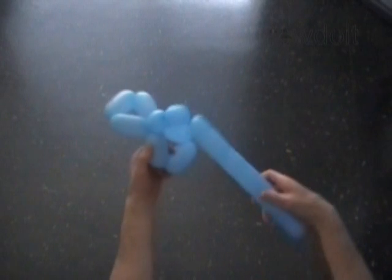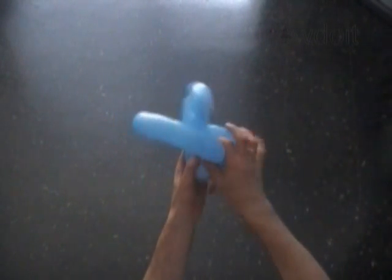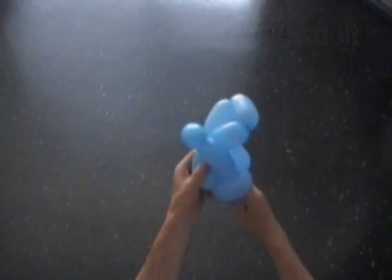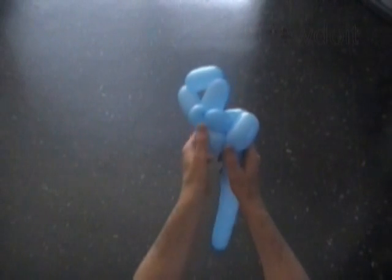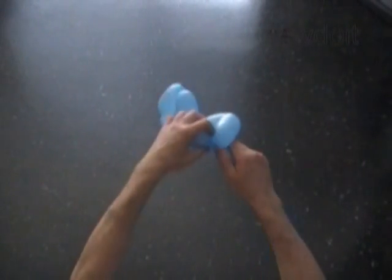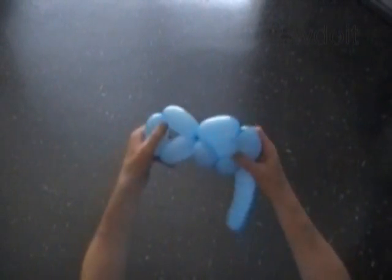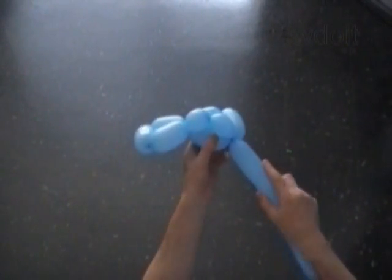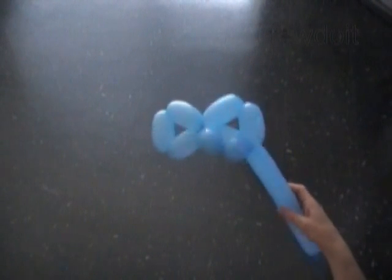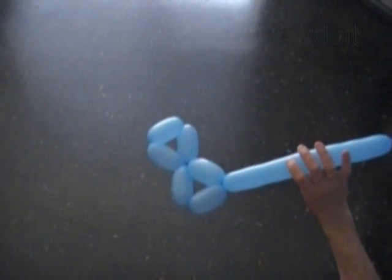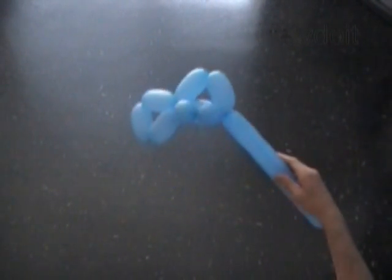Now we have to lock the free end of the 8th bubble between 2 bubbles at any corner. Let's lock it between the 2nd and the 3rd bubbles. We have to pull the rest of the balloon through the loop of the first 3 bubbles. The last 2 small bubbles is in a part of our pyramid.